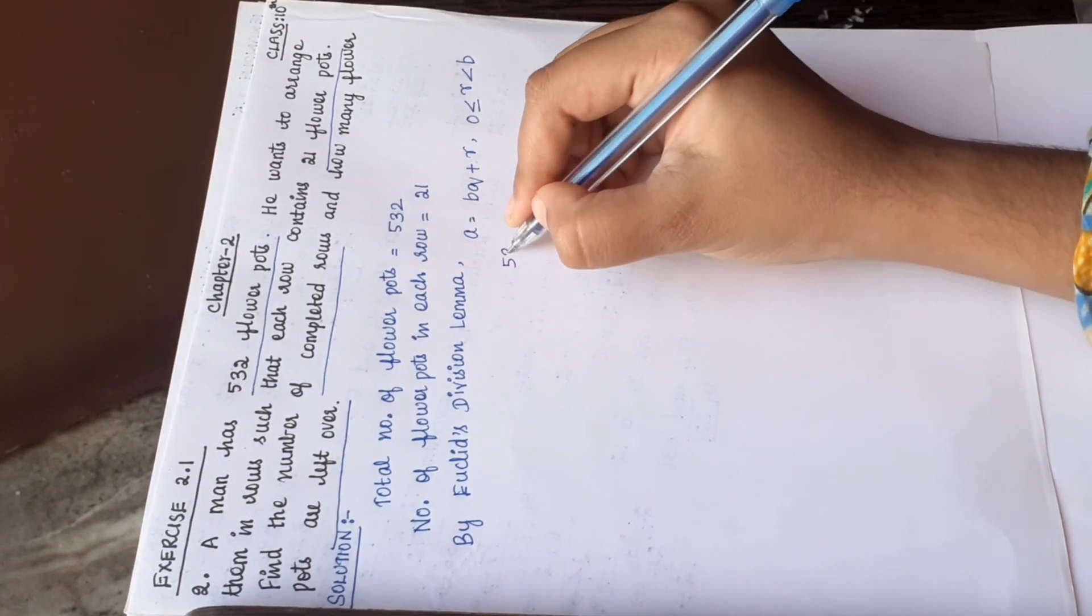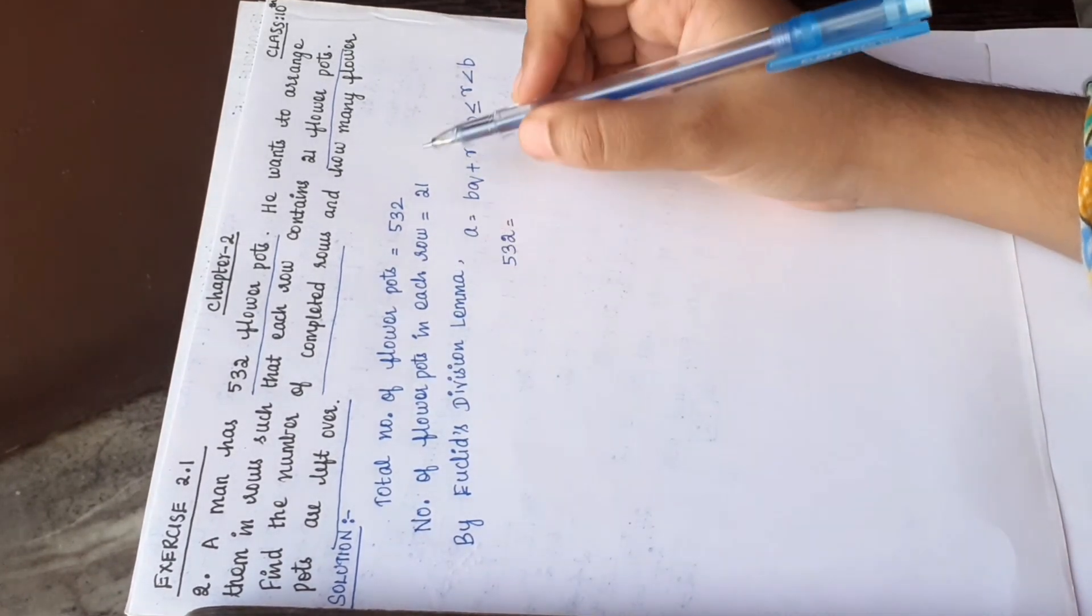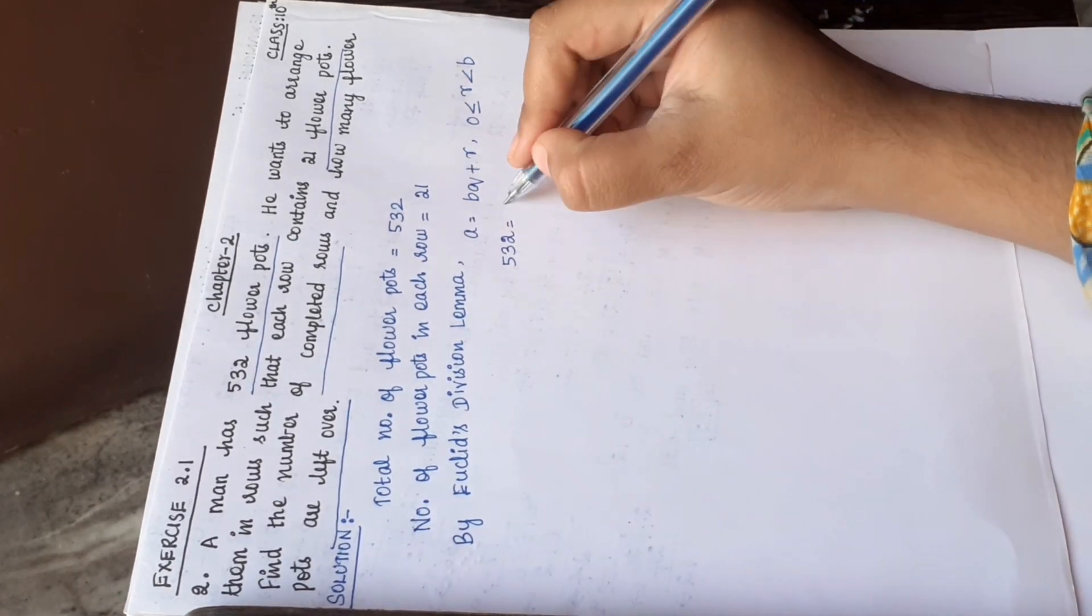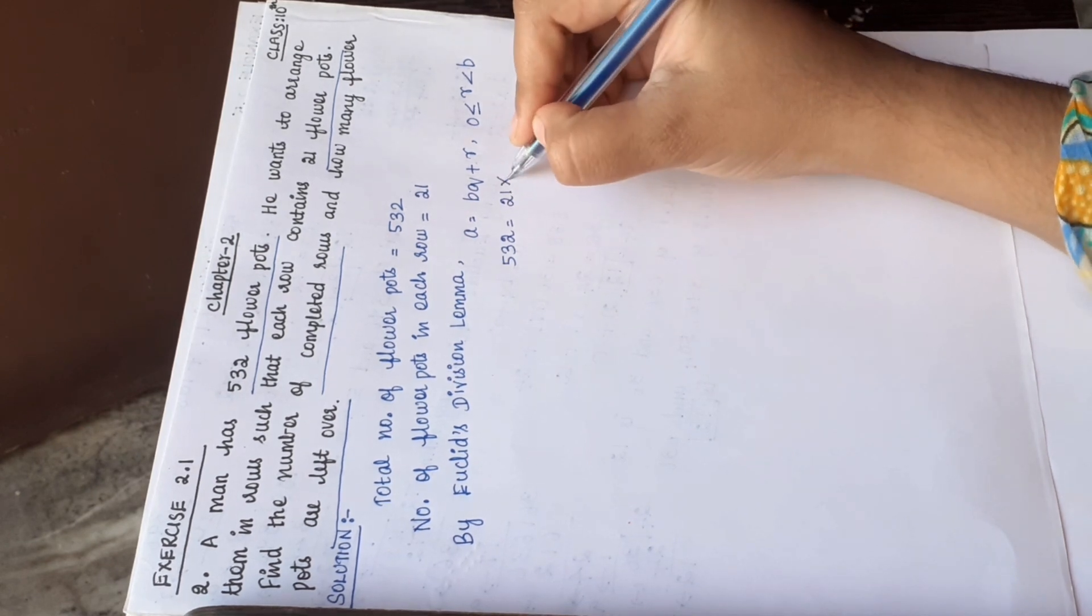So now total flowerpots are 532, so that is a. This is 532 is equal to number of flowerpots in each row 21, so 21 into n.